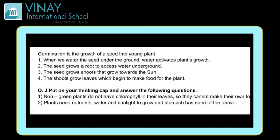Germination is the growth of a seed into a young plant. Its steps: first, when we water the seed under the ground, water activates the plant's growth. Jab hum seed ko zameen mein gaad dete hain, uske baad mitti daal dete hain, phir paani daalte hain — woh paani seed ko activate karta hai grow hone ke liye. Second, the seed grows a root to access water underground.